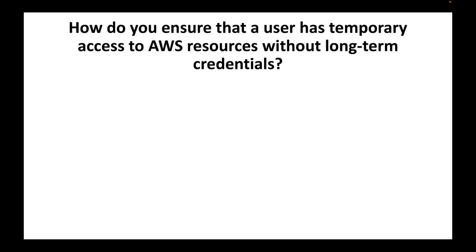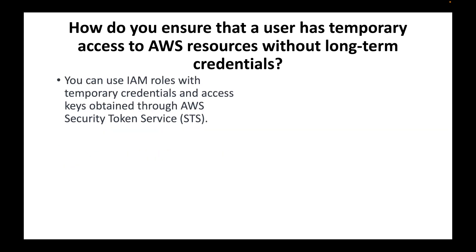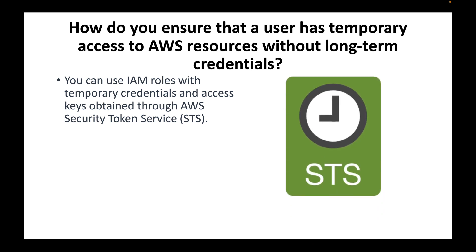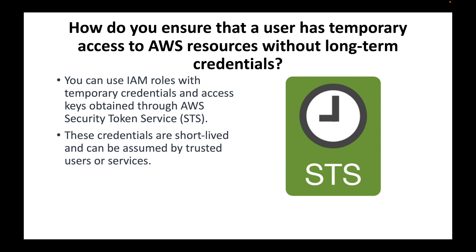The next question is: how do you ensure a user has temporary access to AWS resources without using long-term credentials? For this we use IAM roles. Whenever we talk about giving access without any credentials, we use IAM roles with temporary credentials and access keys obtained through the STS service. STS stands for Secure Token Service, and it generates temporary credentials used by IAM roles to access services or resources. These credentials are short-lived and can be assumed by trusted users or services.